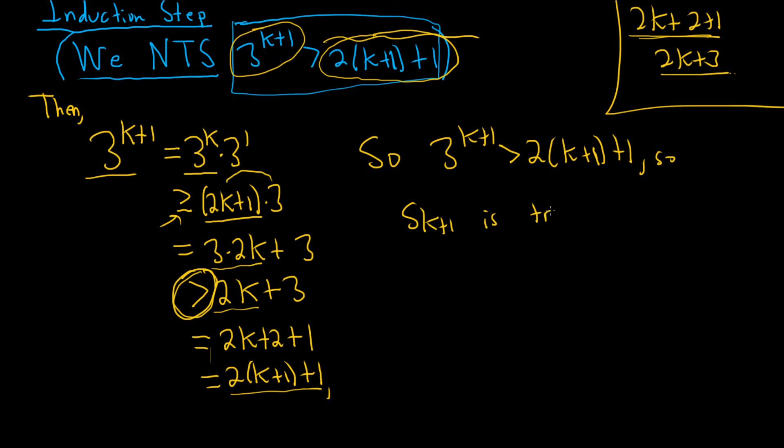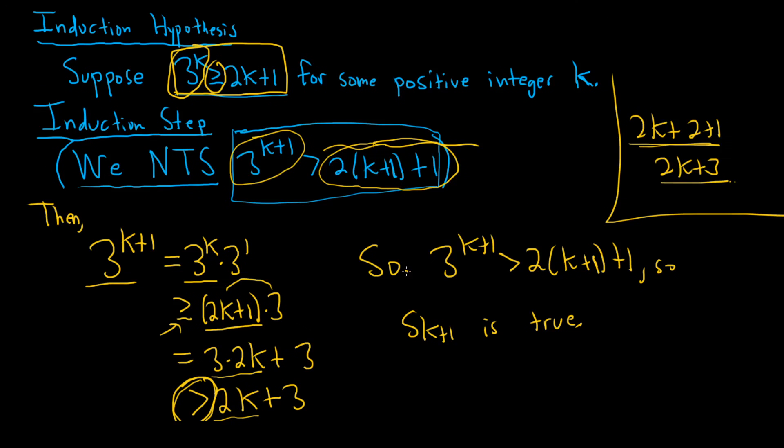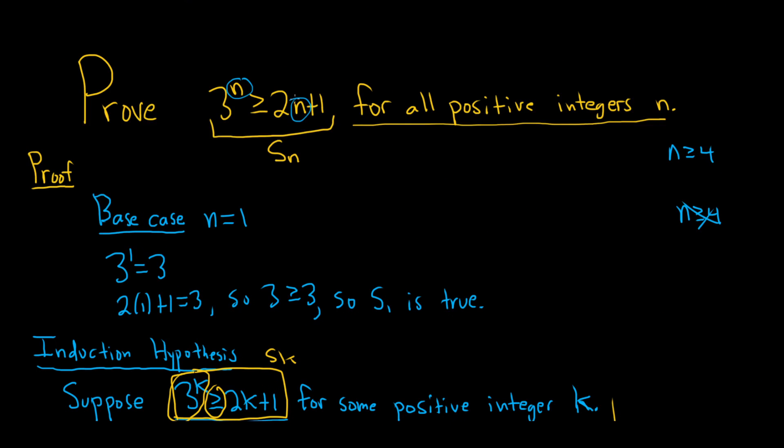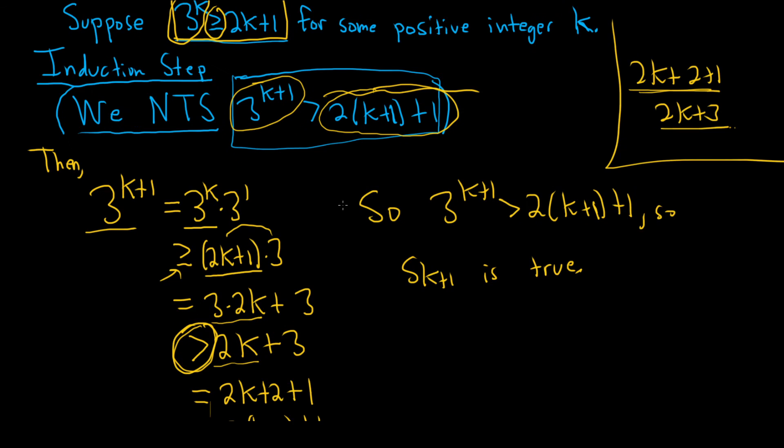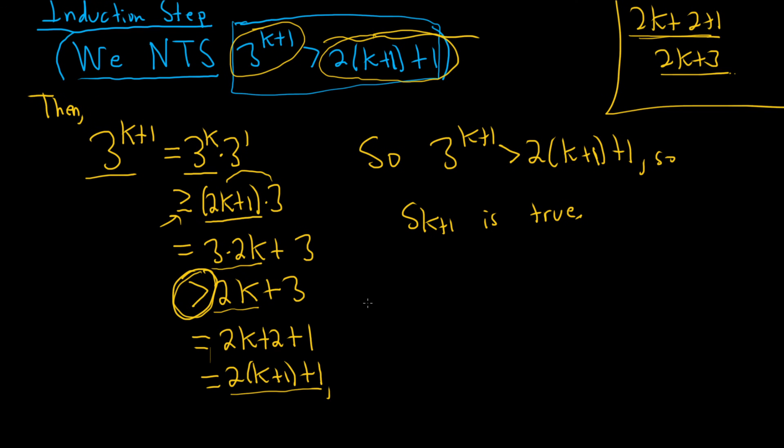This means our statement is true when n is equal to k plus 1. So how it works is in the induction hypothesis, you assume your statement is true for k. And in the induction step, you show it's true for k plus 1. This here, this is your s sub k. So sometimes people will write, suppose s sub k is true. But it's better to actually plug it in. So basically in the induction hypothesis step, you plug in k. And then the induction step, you show it's true for k plus 1.